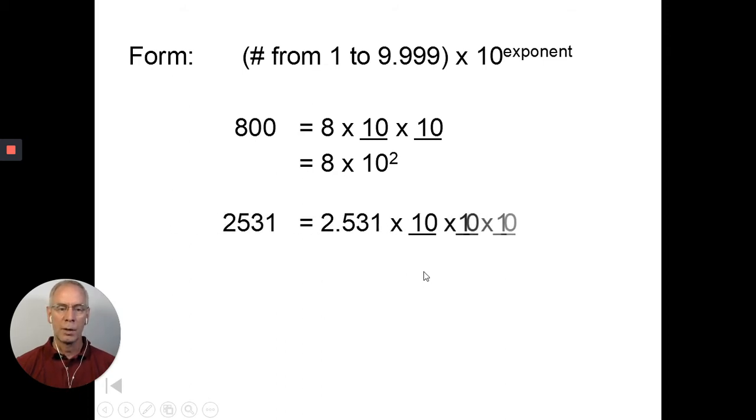Let's try this one. 2,531 is the same as 2.531. That number 2.531 is between 1 and 10, times 10 times 10. That'd be 25.31 times 10, 253.1 times 10.